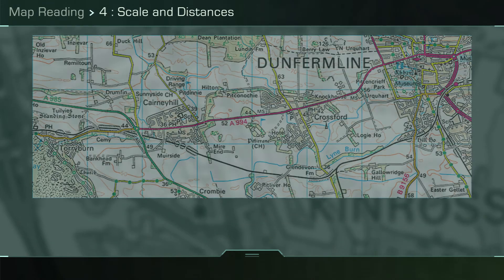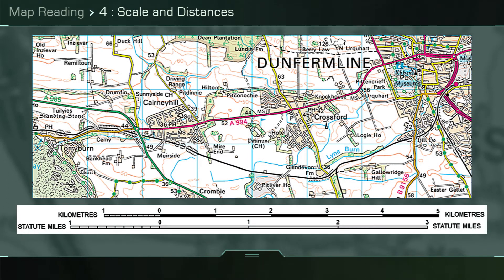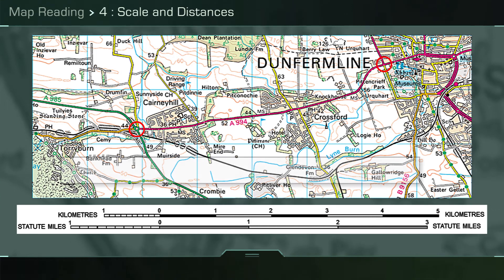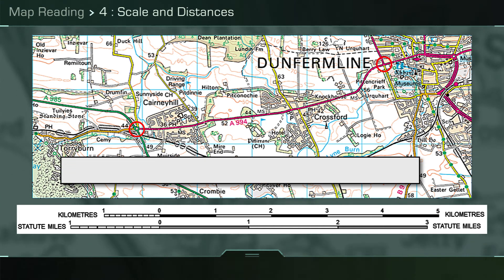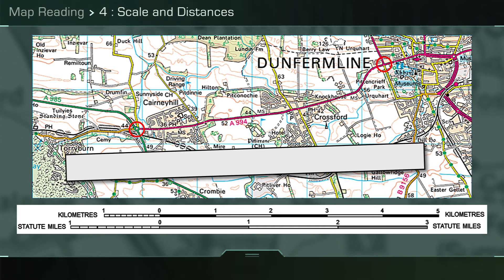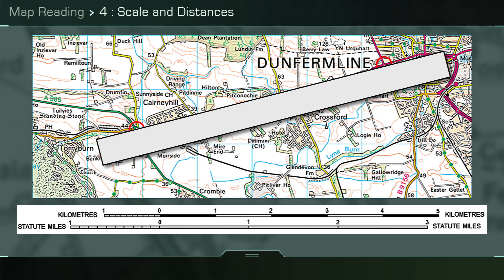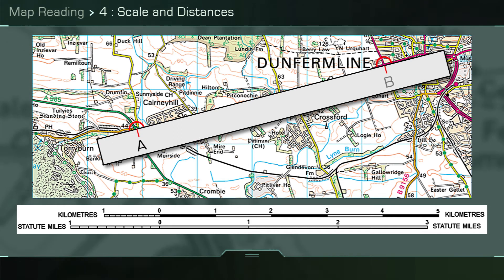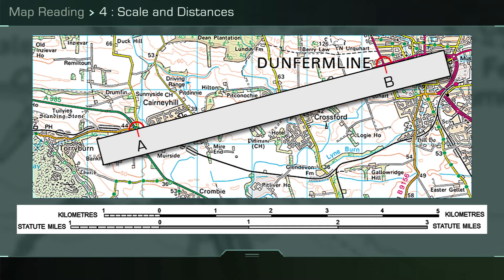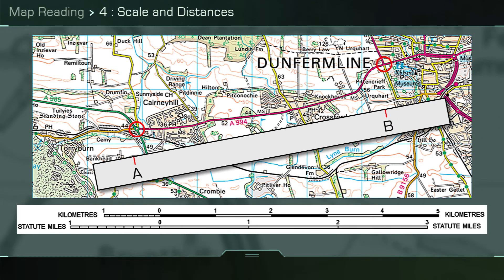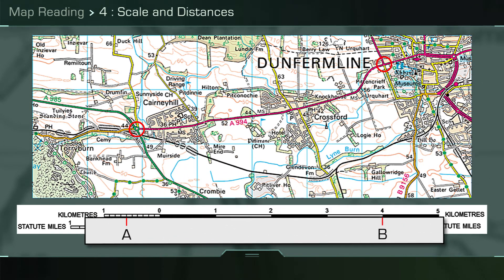In order to measure the distance between two locations marked on the map, place the edge of a piece of paper between the locations and mark the start and finish points on the paper. Then simply place this along the scale line and read off as accurately as possible how far away the two points are.